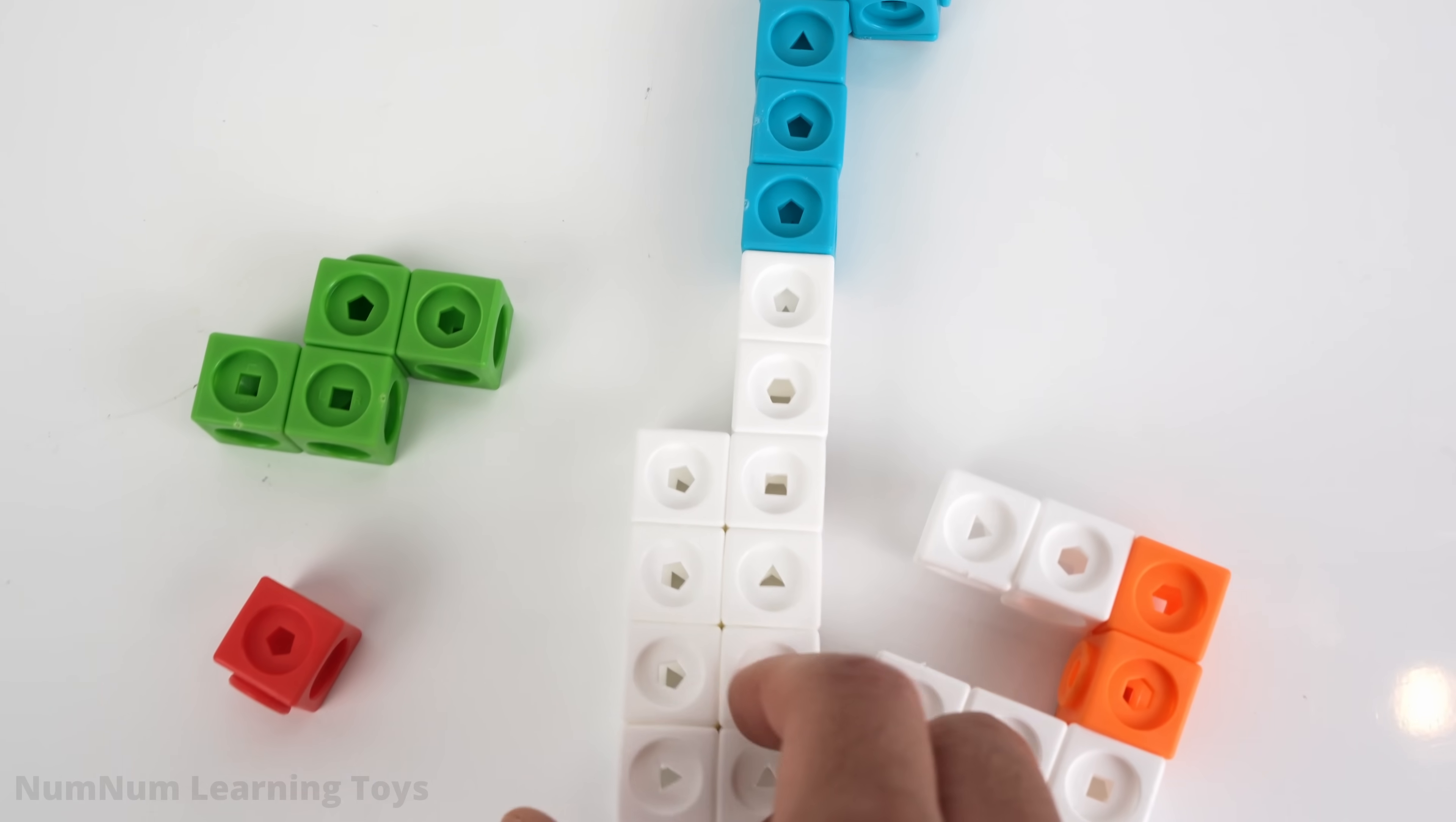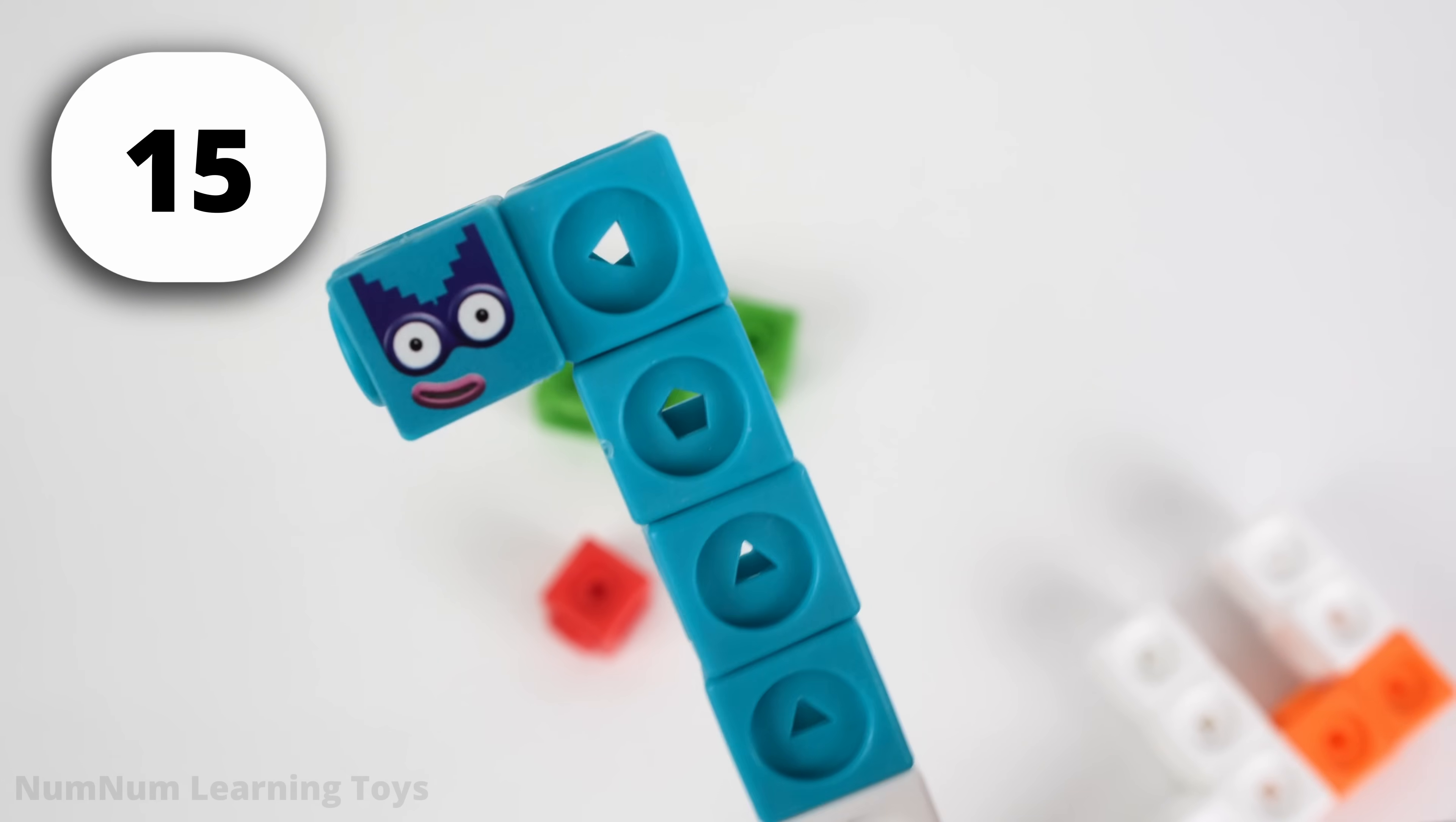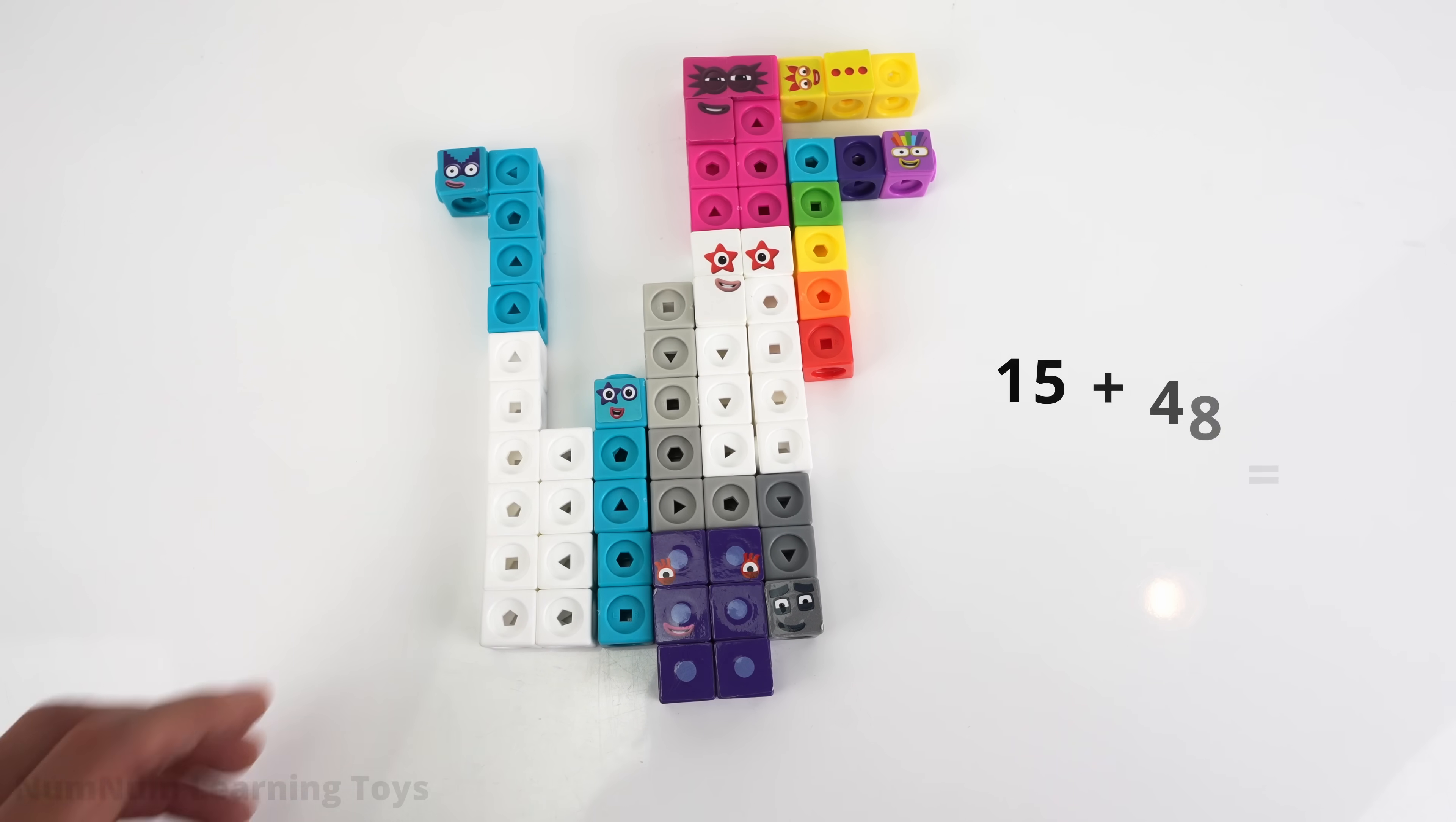This number block in the middle has 5 blue blocks at the top and 10 white blocks on the bottom. It's 15! Agent 15! Hush hush! Adding 15 blocks to 48 will give us what number? 63!